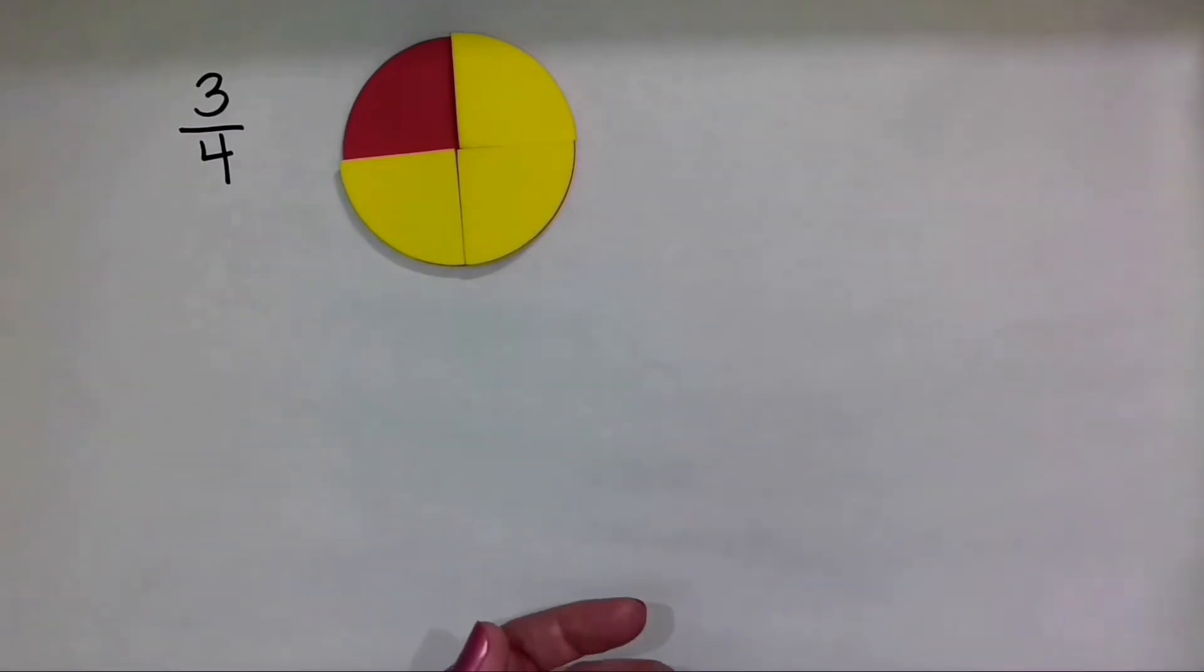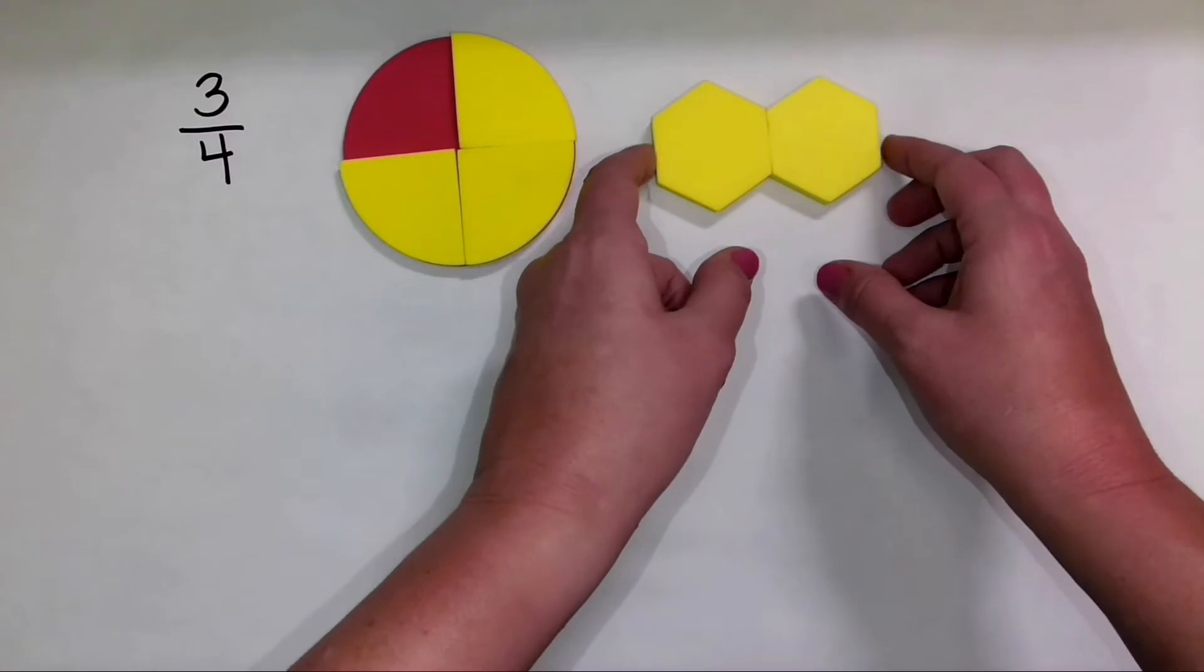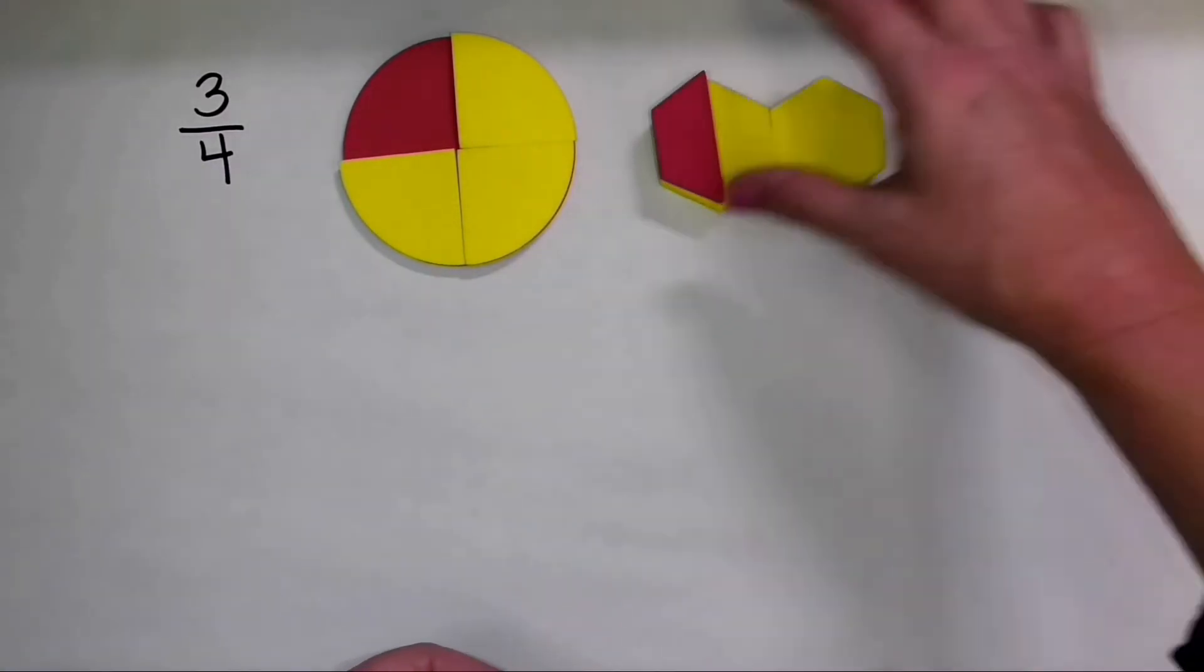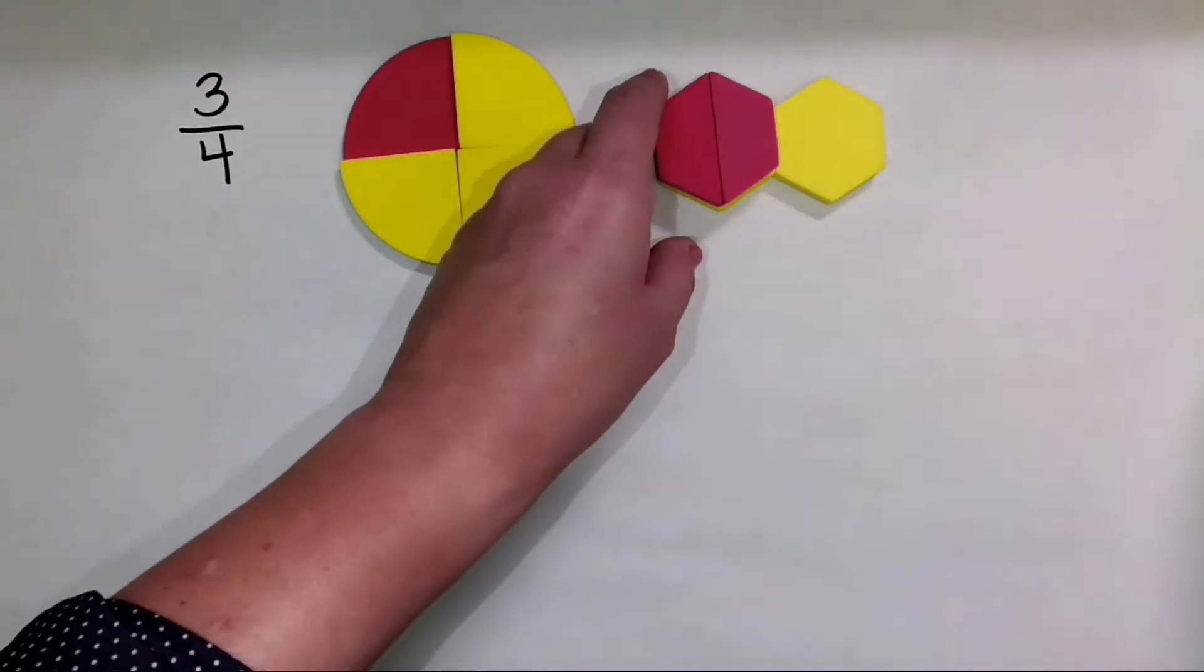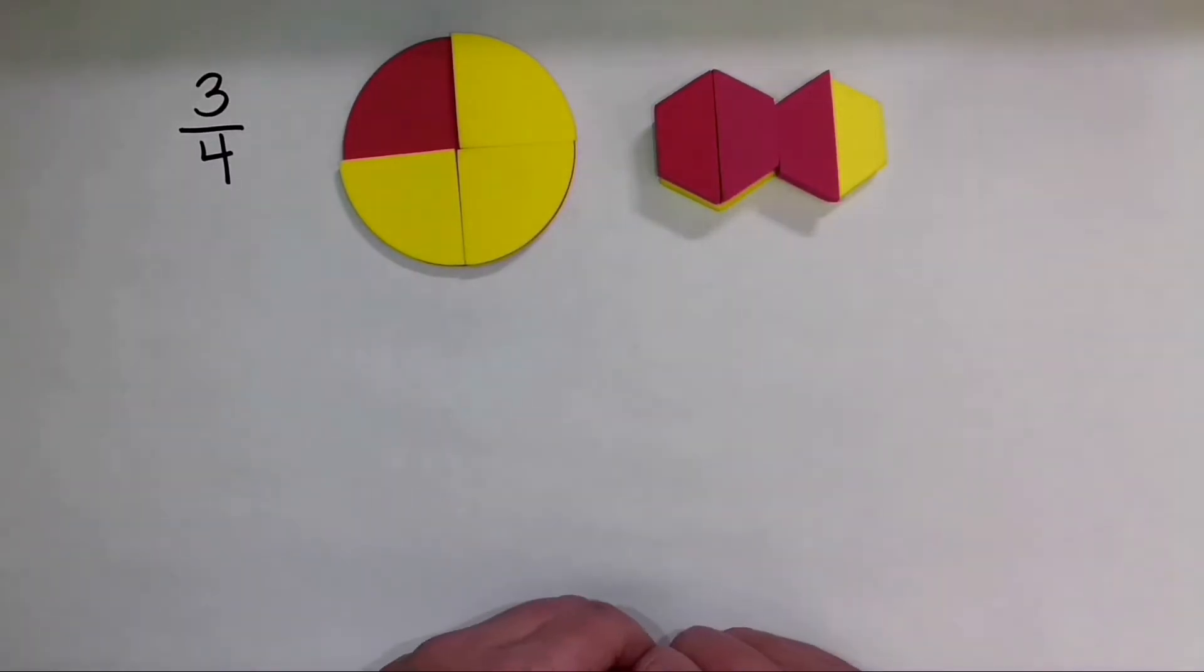We can also show this in slightly different ways. So here I am going to take two shapes, and I can show 3 fourths of the area of these shapes. So here I have shown the fraction 3 fourths.